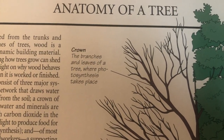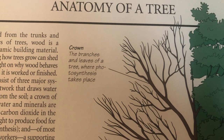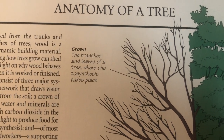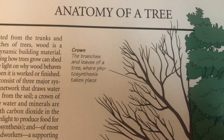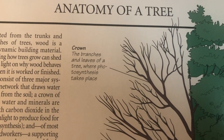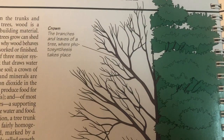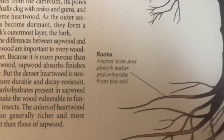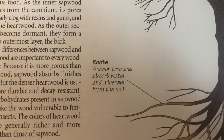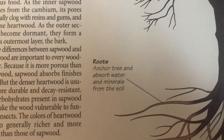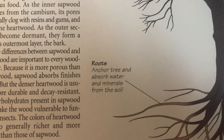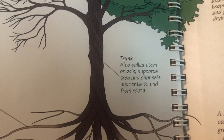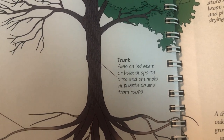This is the crown — the branches and leaves of the tree — where photosynthesis takes place. The roots anchor the tree and absorb water and minerals from the soil. The stem supports the tree and channels nutrients from its roots.